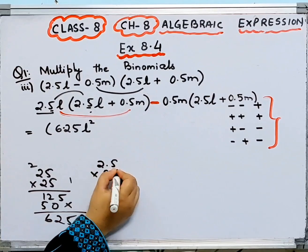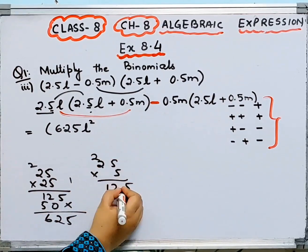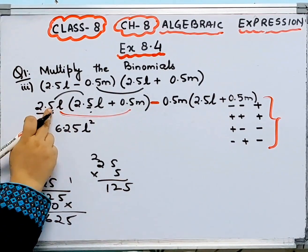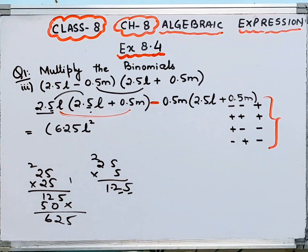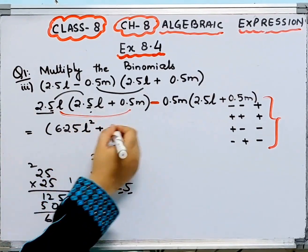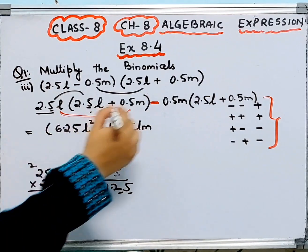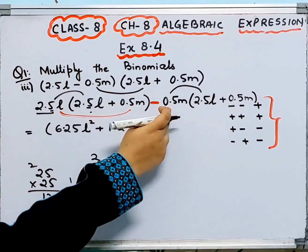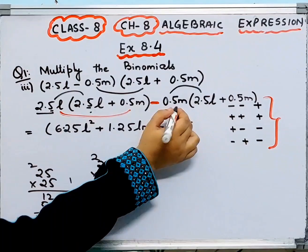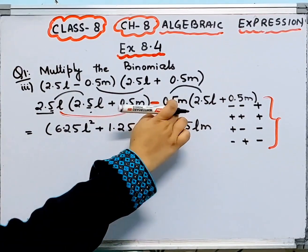Now 2.5 into 0.5: multiply 25 by 5 — 5 fives are 25, carry over — we get 125. Counting decimal places: 1 plus 1 is 2, so decimal goes 2 places, giving 1.25. With plus times plus this is plus 1.25 L into M, so plus 1.25LM.